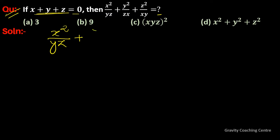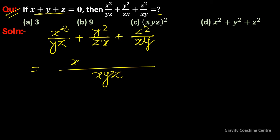We can rewrite the expression x squared upon yz plus y squared upon zx plus z squared upon xy. Simplifying each term by appropriate cancellation, the first term becomes x cube.